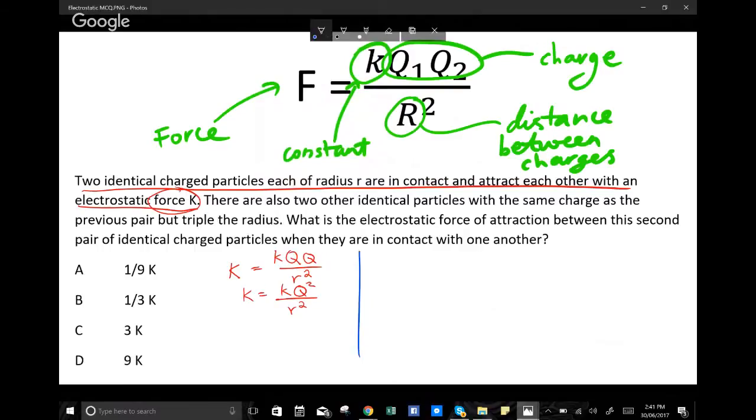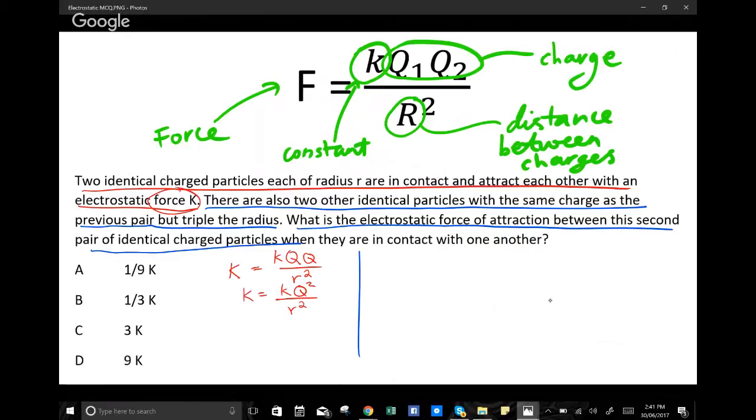So the next part of the question says there are also two other identical particles with the same charge as the previous pair but triple the radius. What is the electrostatic force of attraction between this second pair of identically charged particles when they're in contact with each other?